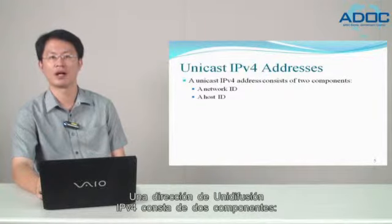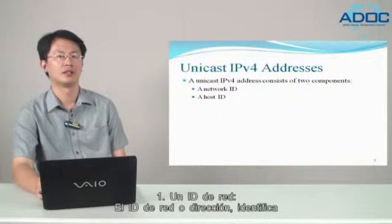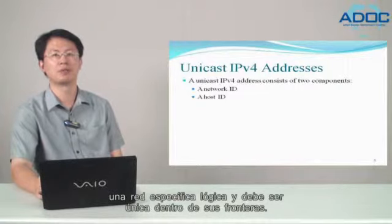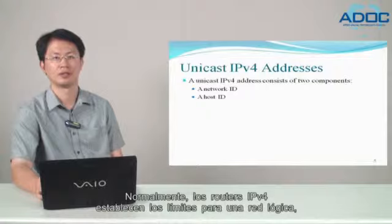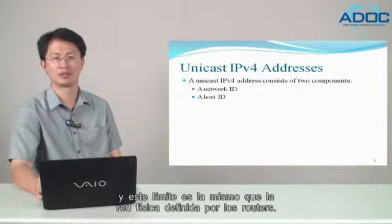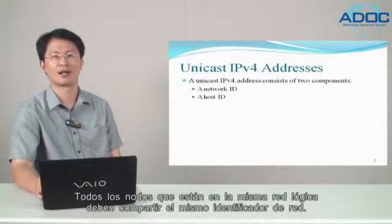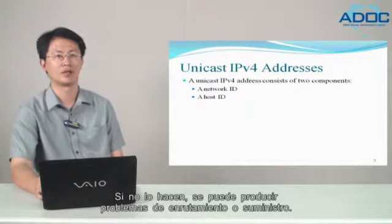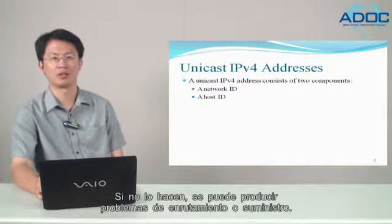A unicast IPv4 address consists of two components. First, a network ID. The network ID or address identifies a specific logical network and must be unique within the boundaries. Typically, IPv4 routers set the boundaries for a logical network, and this boundary is the same as the physical network defined by the routers. All nodes on the same logical network must share the same network ID. If they don't, routing or delivery problems occur.